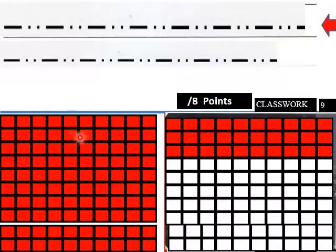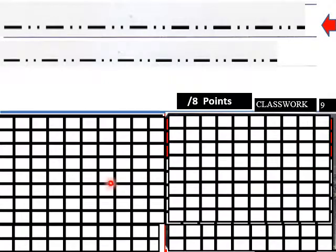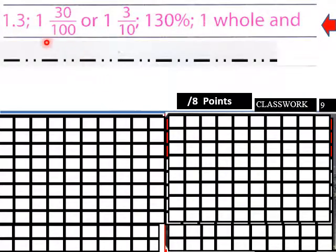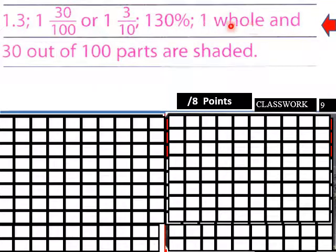What do we got here? So we got 100 here and then 30, so it'll be 1.3, or 1 and 30 over 100, or 1 and 3 tenths, 130 percent. One whole and 30 out of 100 parts are shaded. So all these would represent the same thing.